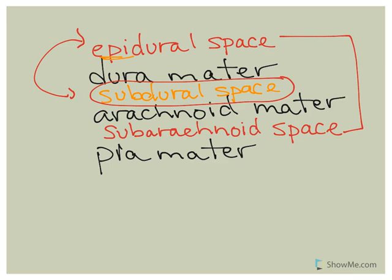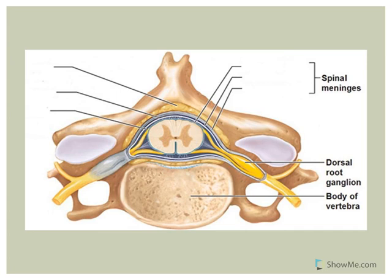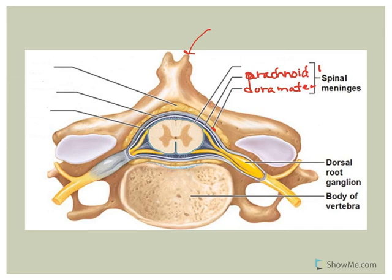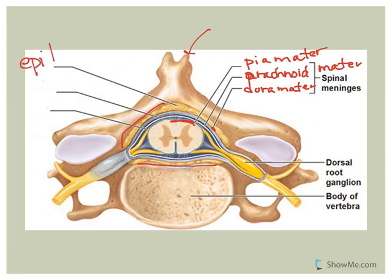Let's look at a picture showing the spinal cord. Here is a cervical vertebra with the spinal meninges. The outermost layer is the dura mater, the middle one is the arachnoid mater, and the one firmly attached to the spinal cord is the pia mater. In the picture, you can see fat located all around in that region — this represents fat found in the epidural space. The epidural space contains adipose tissue.